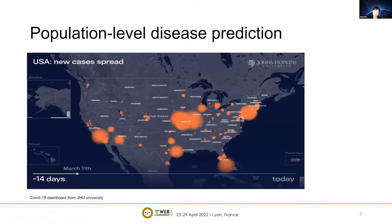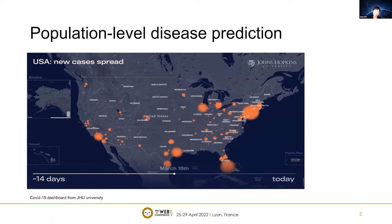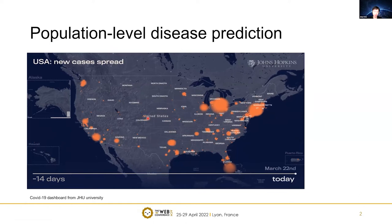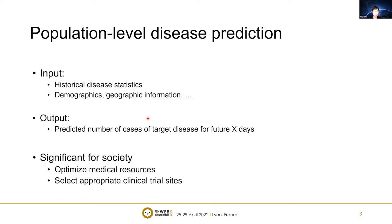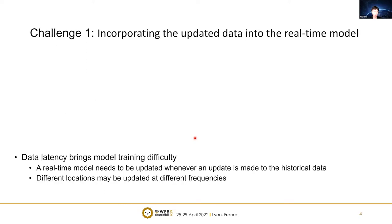Pandemic diseases such as the novel coronavirus COVID-19 have been spreading rapidly across the world and pose a severe threat to global public health. It causes significant disruption to people's daily life as well as substantial economic loss. Therefore, understanding the spatial and temporal disease progression patterns and conducting accurate location-wise, population-level disease prediction is critical.